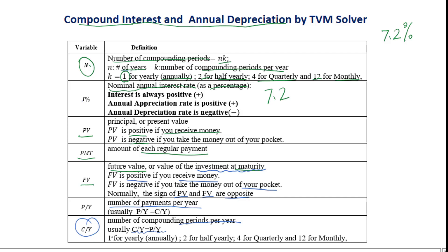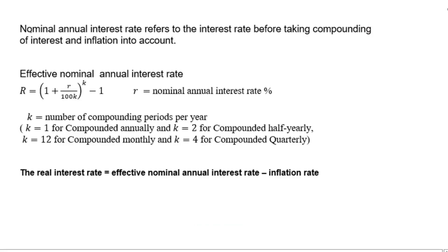Compounding periods per year: 1 for yearly or annually, 2 for half-yearly, 4 for quarterly, and 12 for monthly. Nominal annual interest rate refers to the interest rate before taking compounding of interest and inflation into account.